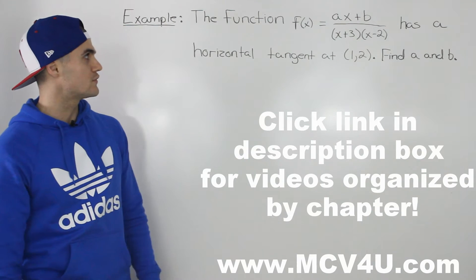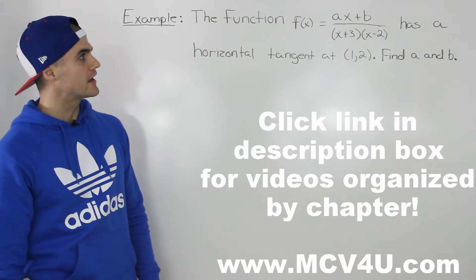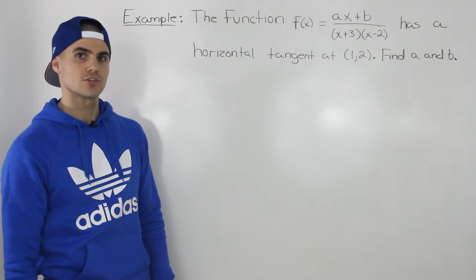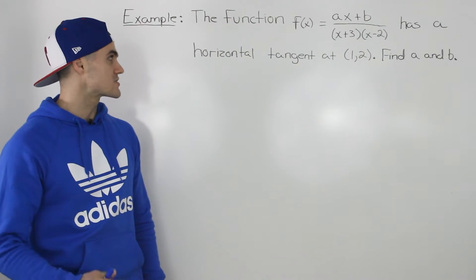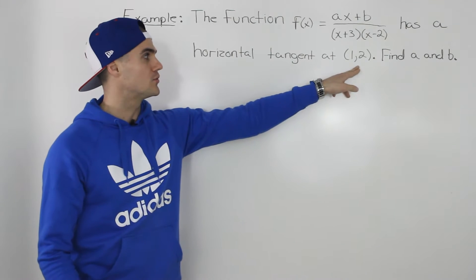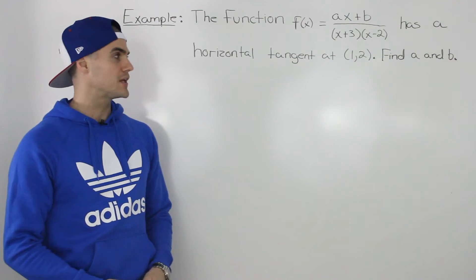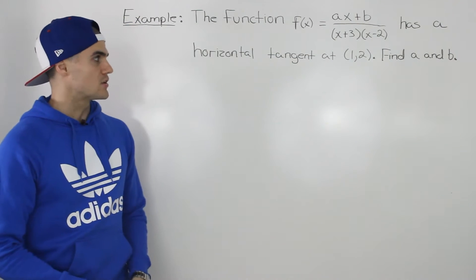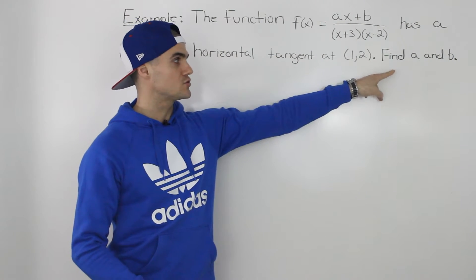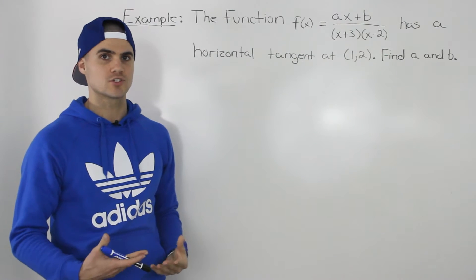Moving on to the next example. The function f of x equals (ax + b) over (x + 3)(x - 2) has a horizontal tangent at the coordinate (1, 2), and we have to find the constants a and b. Notice how there are two unknowns that we have to find — two constants — so that means we need two equations.